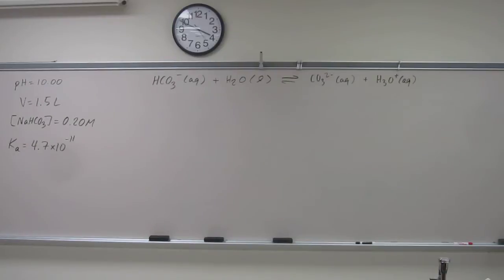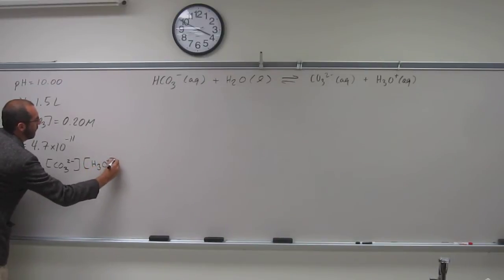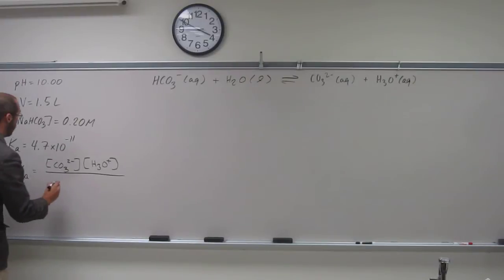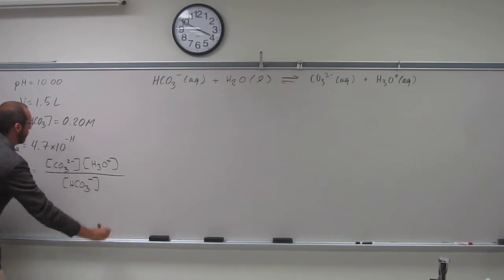We also know the Ka equation. Ka equals CO3 2 minus concentration times H3O plus concentration, divided by the HCO3 minus concentration. The pH would give us the H3O plus concentration. We can get the H3O plus concentration from the pH.